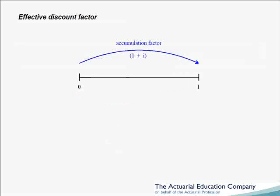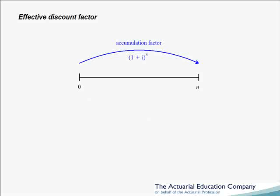Let's introduce some notation for the effective discount factor. For an effective interest rate, where we have an accumulation factor of 1 plus i over 1 year, we define the discount factor for 1 year as v, which is 1 over (1 plus i), or equivalently (1 plus i) to the minus 1. So for n years, where we have an accumulation factor of (1 plus i)^n, discounting over n years means we multiply by our discount factor v^n, or 1 over (1 plus i)^n, or (1 plus i) to the minus n.